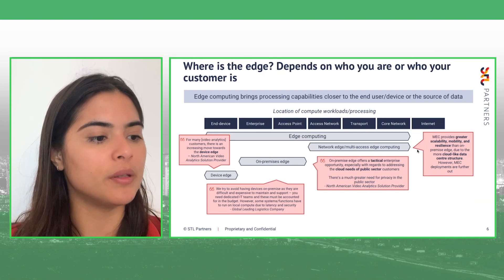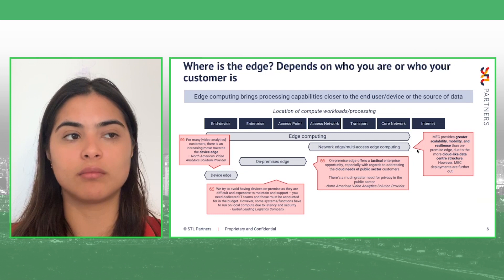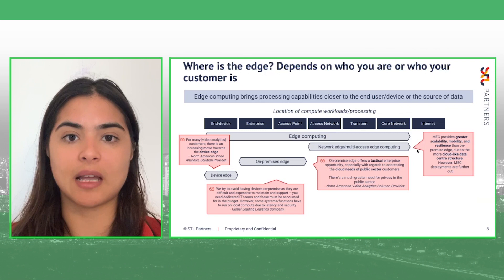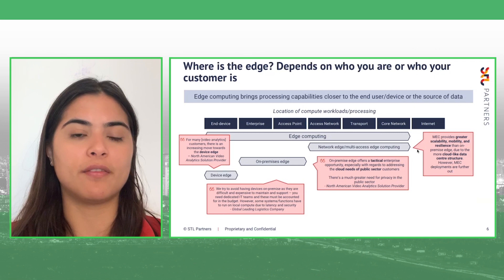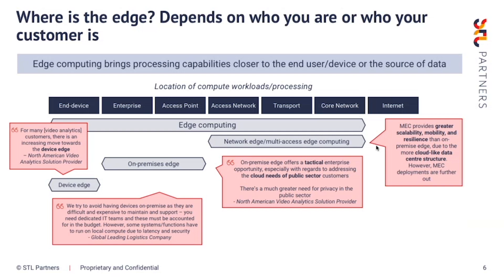There are quotes here from companies we've spoken to — both solution providers, such as a video analytics solution provider, and end enterprises, explaining why they see a move towards device edge. The second category is on-premises edge, which puts the edge compute resource at the customer or enterprise site — a building, factory, retail store, or hospital. A lot of the time this is about keeping things secure in the customer premises and reducing latency by putting applications closer to the source of the data.